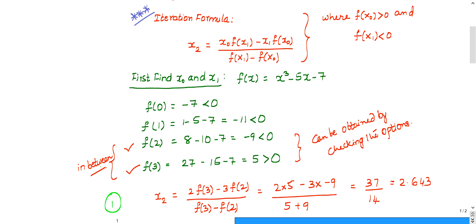The iteration formula is x2 is equal to x0 f of x1 minus x1 f of x0 divided by f of x1 minus f of x0. So this is x0 pre-multiplied with f of x1, this is x1 pre-multiplied with f of x0. So try to remember this iterative formula. Then you can solve any question based on secant method.